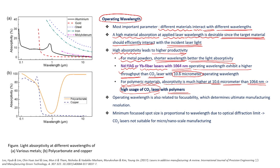On your screen you can see the variation of absorptivity in percentage with respect to wavelength for a variety of materials. The black line represents aluminum. You can see the maximum absorptivity is about 30 percent for very short wavelengths below 0.1 micron. As we increase the wavelength the absorptivity is reduced, reaching 0 percent for wavelengths greater than 10 microns. For other materials such as gold, steel, iron, and molybdenum, the curves are shown. Based upon these curves you can choose the appropriate laser for a particular operation.